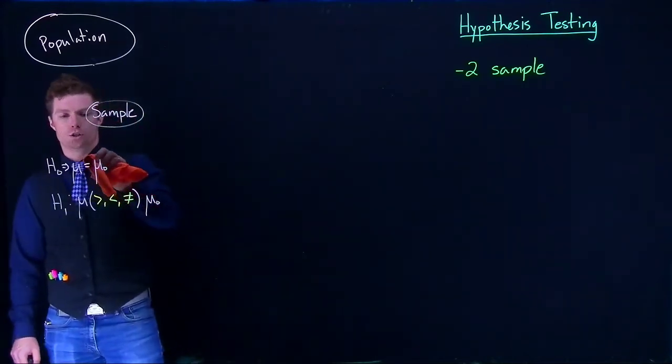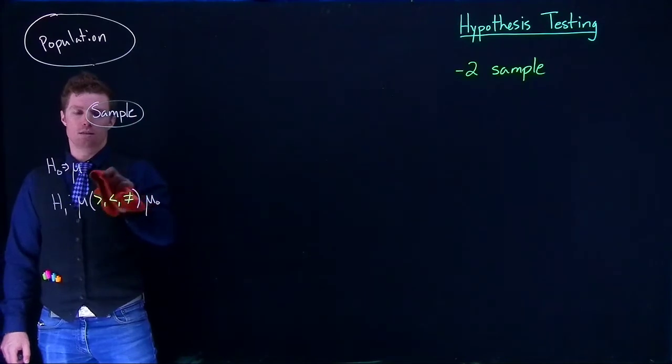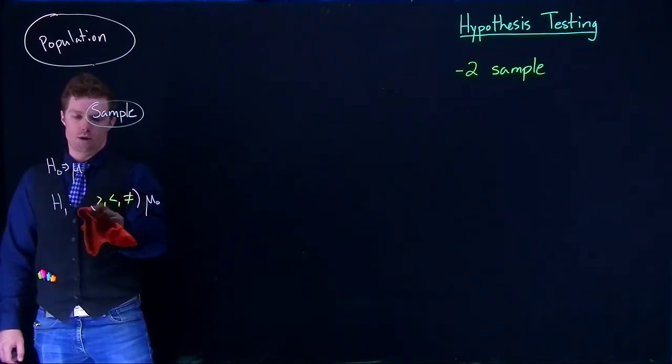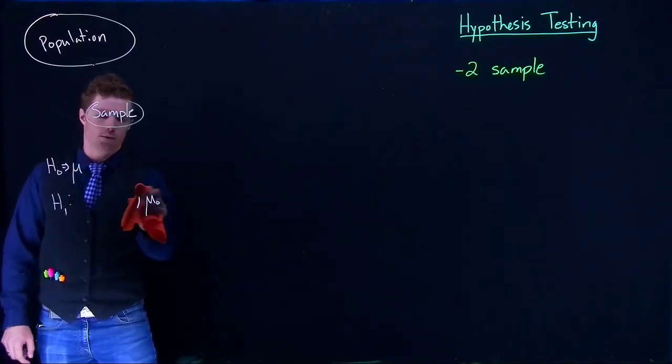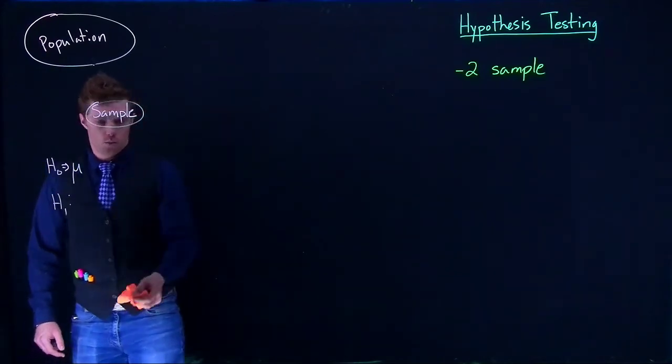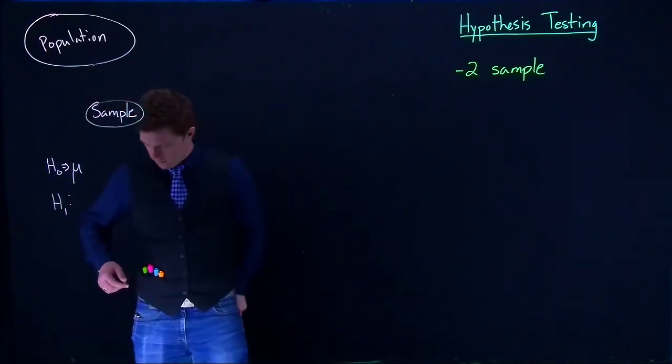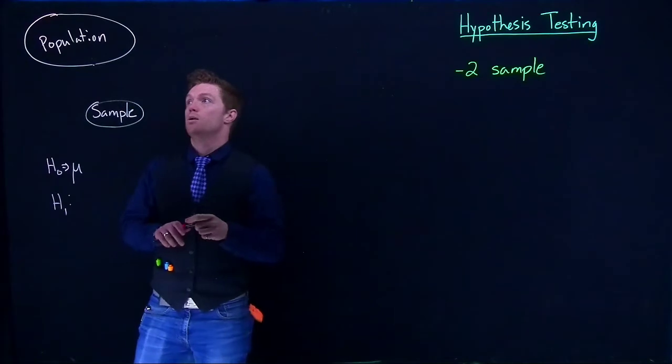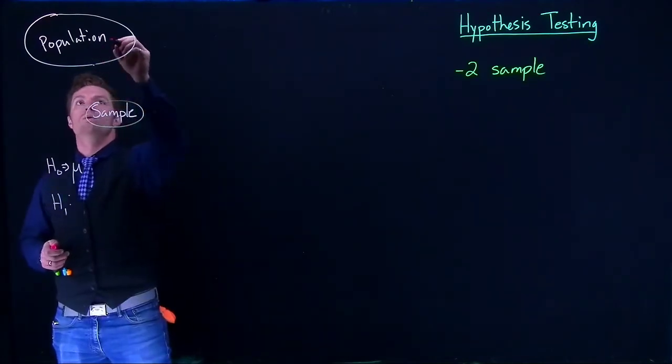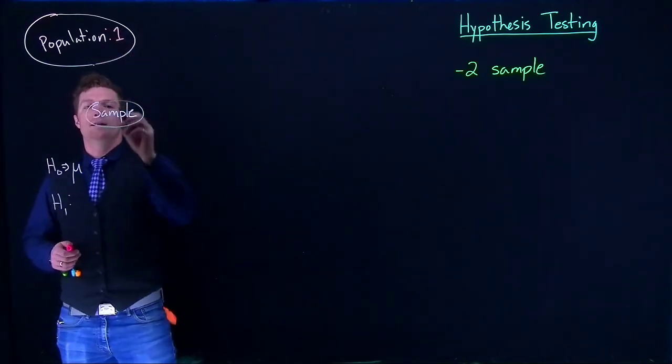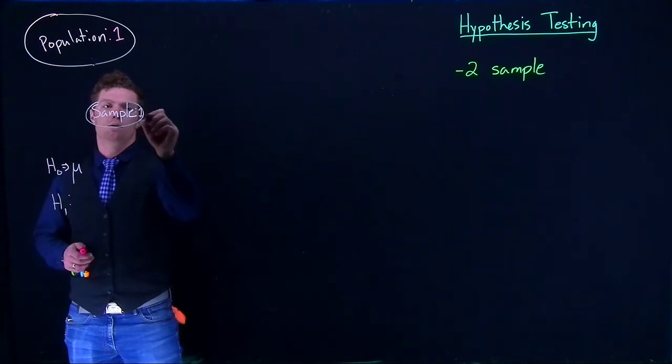Instead of saying that our means are equal to a specific value, we have population 1 and sample 1.